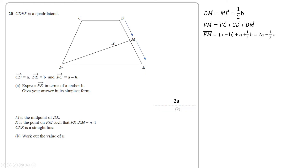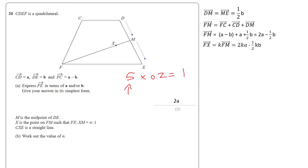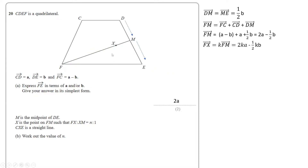F to M equals 2A minus ½B. Even though we can't work out F to X right now, we can say that F to X is just K multiplied by F to M, where K is a scalar quantity. K is multiplying F to M in order to shrink it down to F to X — like multiplying 5 by 0.2 to get 1. So F to X equals 2KA minus ½KB.